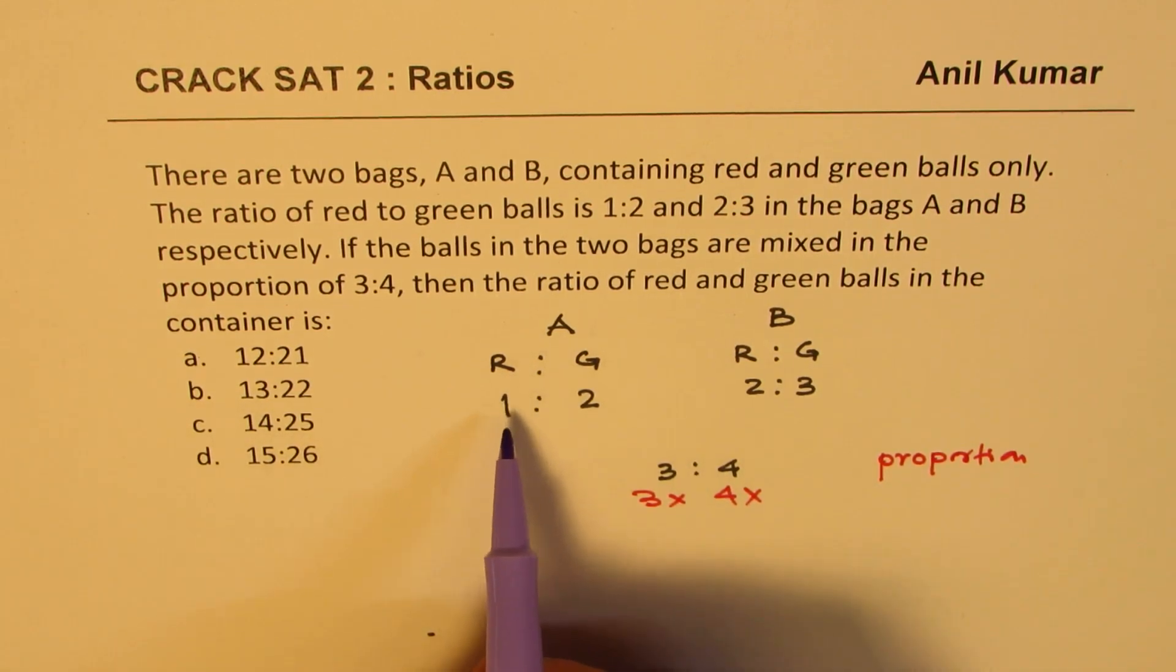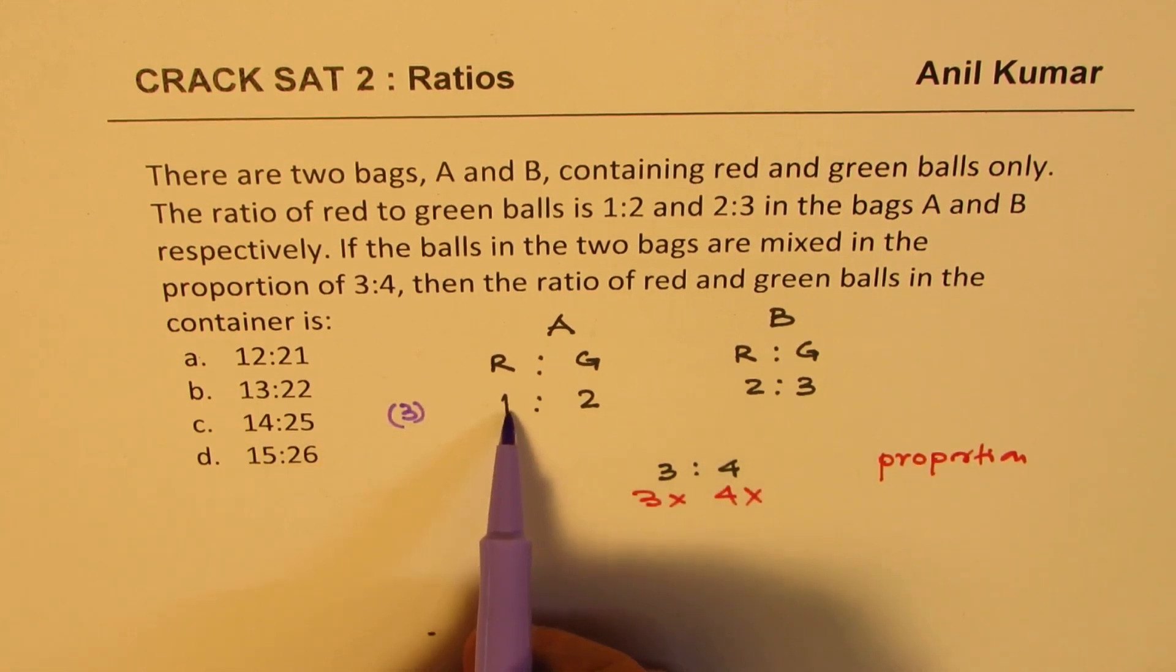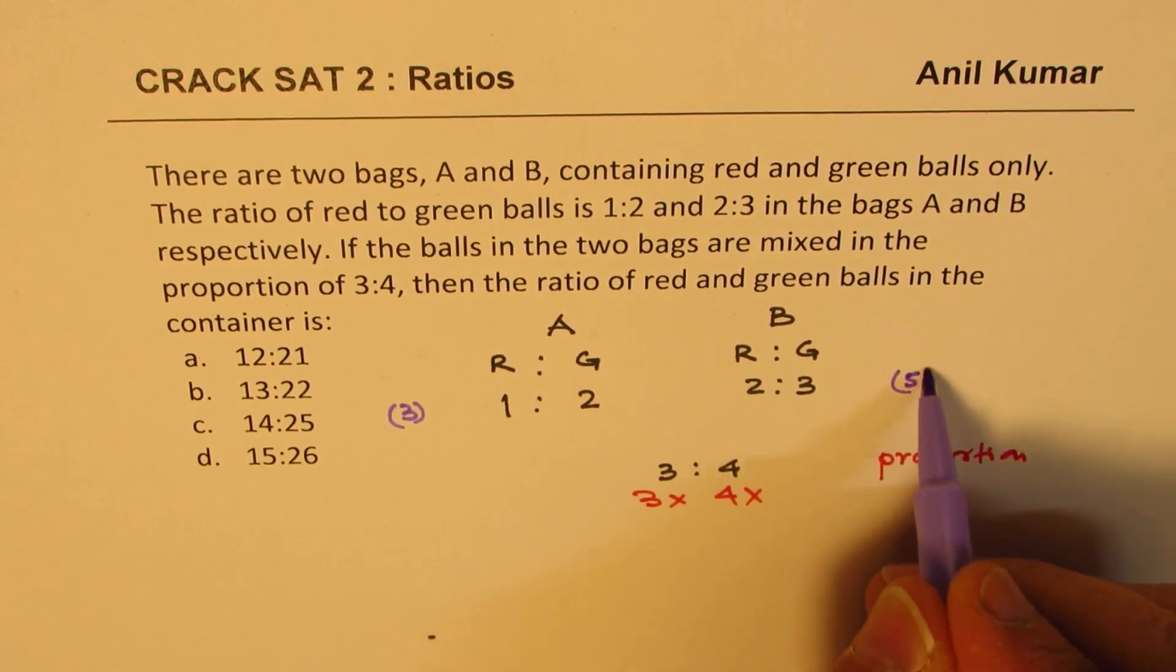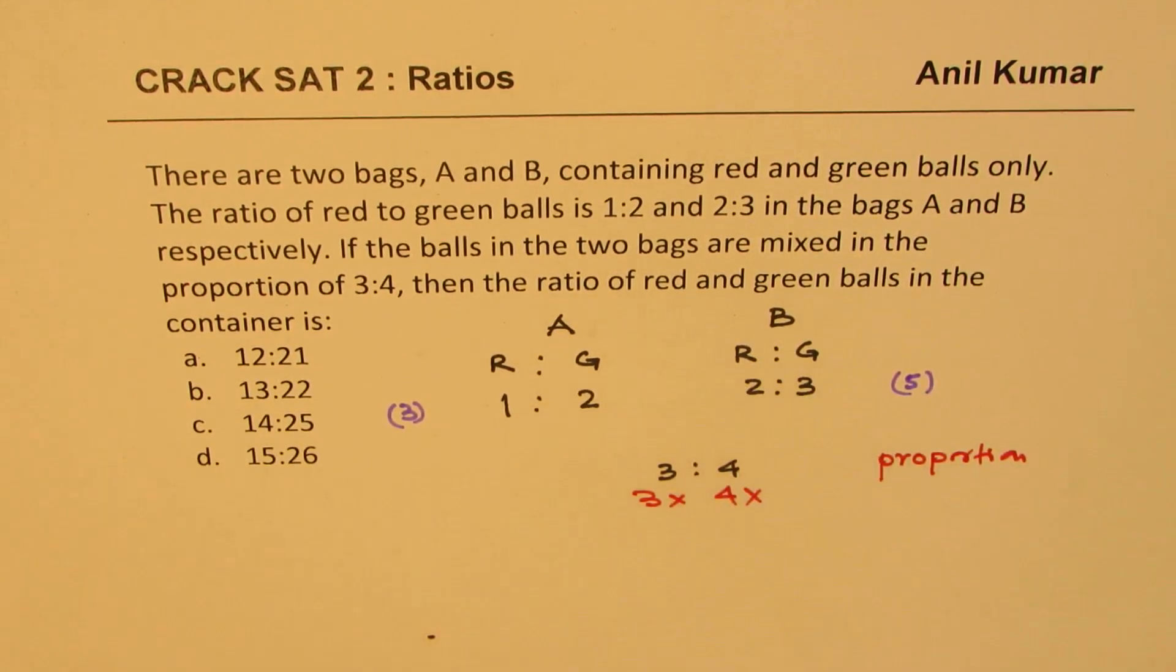Well, when I say that the ratio is 1 is to 2, that is to say if I take 3 balls, in that case 1 is red and 2 are green. And here, if I take 5 balls, in that case 2 are red and 3 are green.